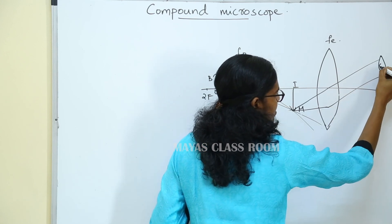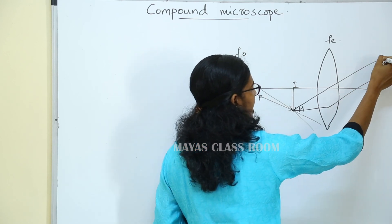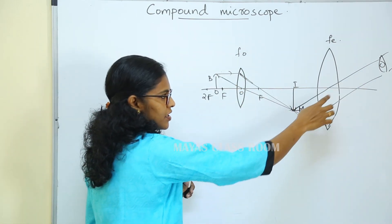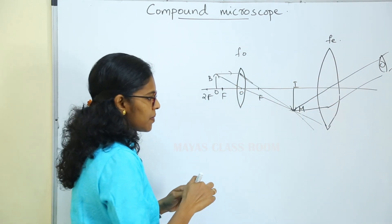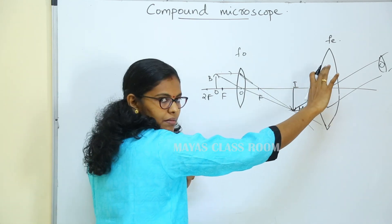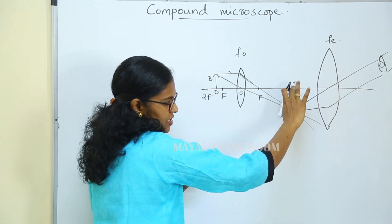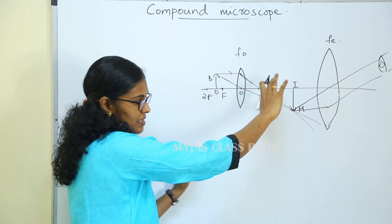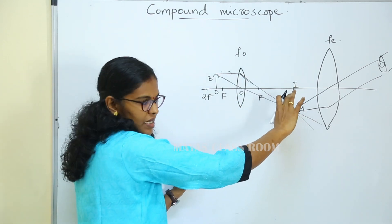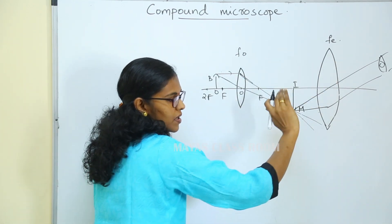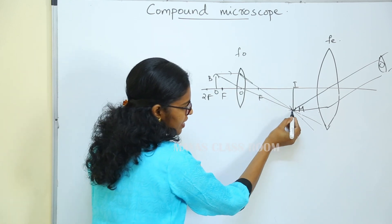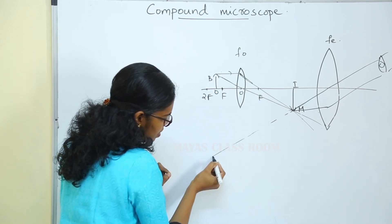We observe this intermediate image through the eyepiece. The eyepiece then forms a further magnified image of this intermediate image, which we observe with our eye.